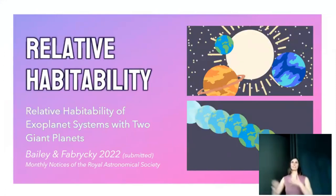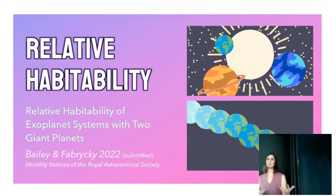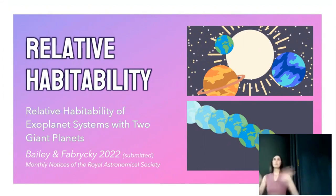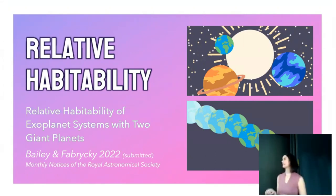We've seen how planet-planet interactions have effects on very long and very short timescales — mostly small nudges between planets. But I mentioned these effects can be quite significant, even destabilizing systems. In this last project I bring together all these ideas — short and long timescales, large and small effects — to see how that affects the habitability of an Earth-like exoplanet.